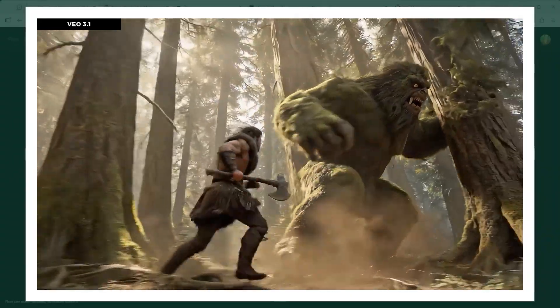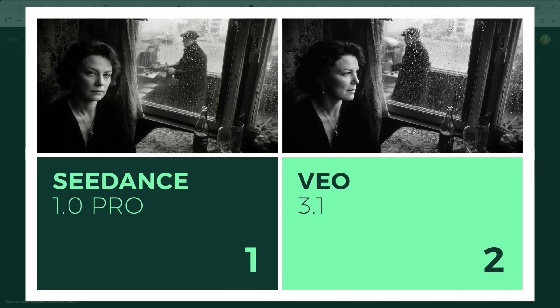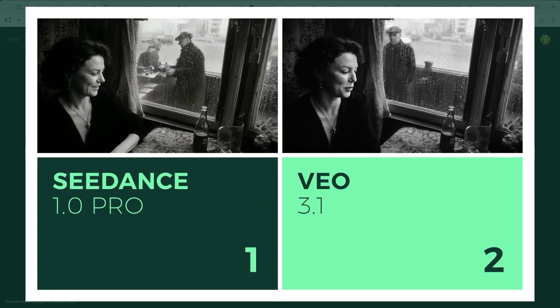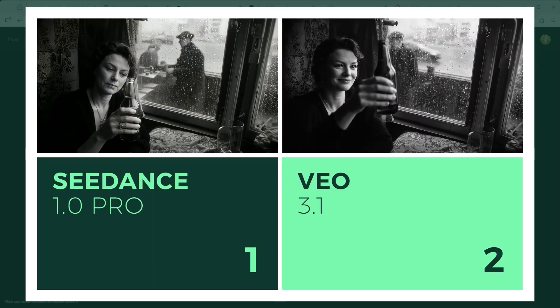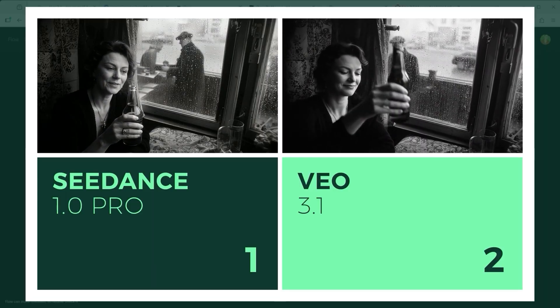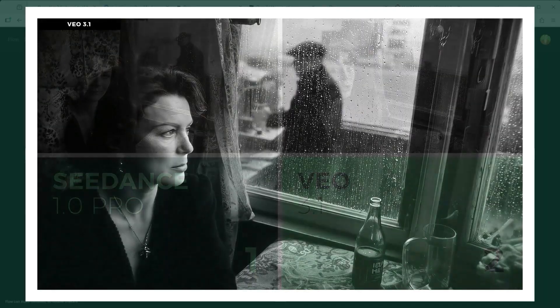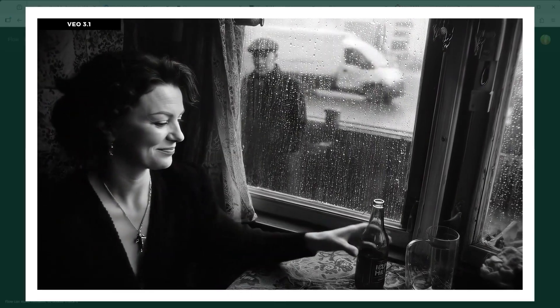Example 6: grey skies but a raised glass. Some people count raindrops; others are just glad they've got something to do — space to think. Both platforms deliver strong results for this one. VO 3.1 edges ahead, thanks to integrated voice and slightly richer camera presence. But Sea Dance Pro holds its ground. No shame in that.